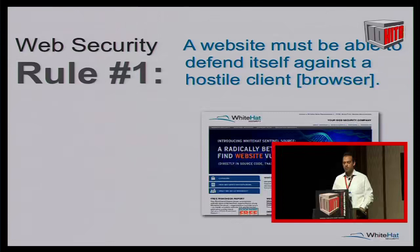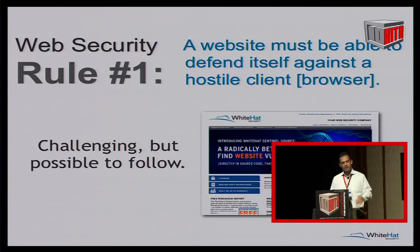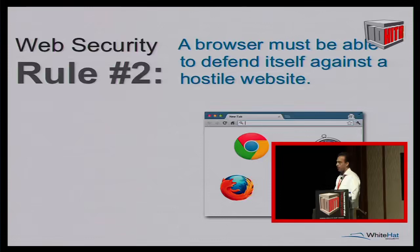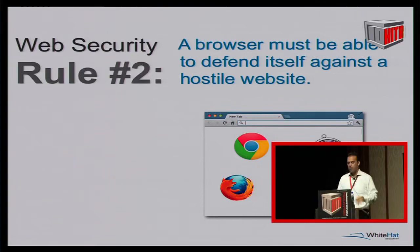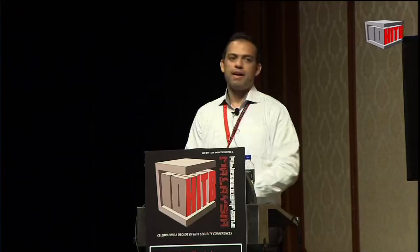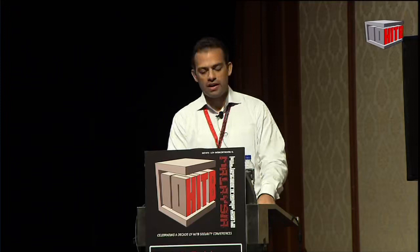So what are the rules of web security? There are two rules. The first rule is a website must be able to defend itself against the hostile client — the browser. With a lot of work and effort it is difficult, but I think you can actually make secure websites. Rule number two is the browser must be able to defend itself against a hostile website. And I'm of the opinion that right now, no matter what you do, especially if you're an end user, this is for all practical matters impossible.